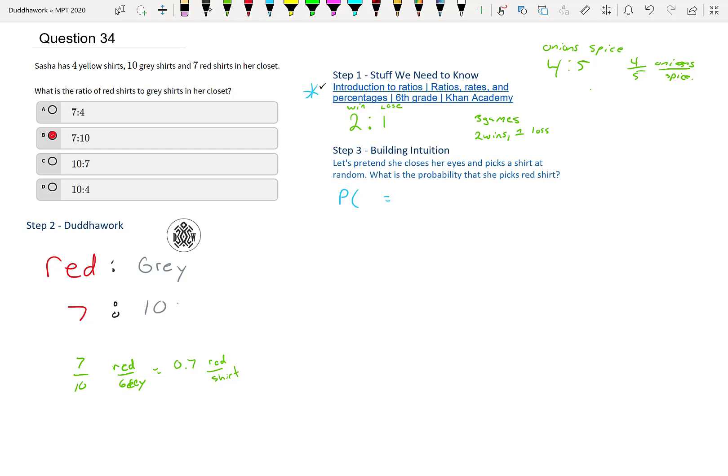So the probability that she picks a red, I'll put smaller, is simply the number of red shirts over the total number of shirts. So of shirts. So how many? So in other words, we have red over yellow plus gray plus red.